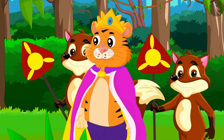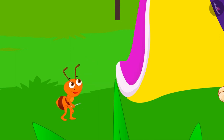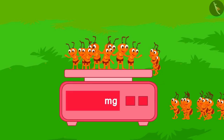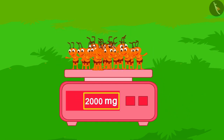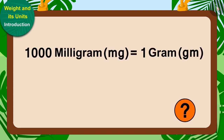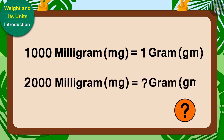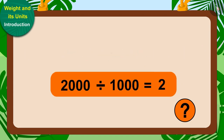The king was about to order 100 mg of sugar when the ant said 20 other ants also helped warn the king. The king weighed those 20 ants — they weigh 2000 mg. Do you know that 1000 mg is equal to 1 gram? So 2000 mg equals 2000 divided by 1000, that is 2 grams.